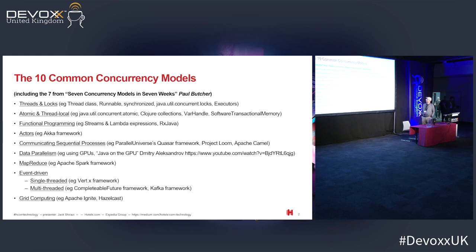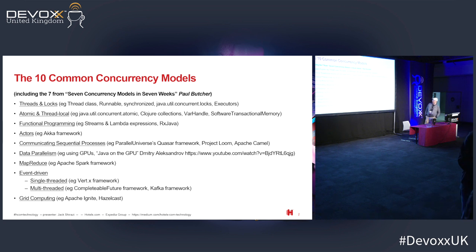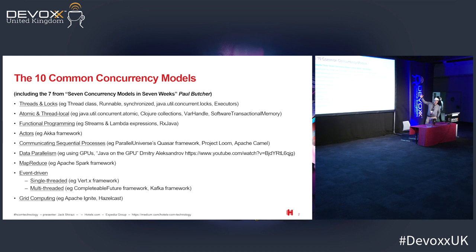I'm talking about these 10 common concurrency models. There are even more, but these are the most common, and probably you've seen and you're using at least one of these. Threads and locks has been there since the beginning of Java, nearly 25 years. The atomic stuff, the second one, was added 15 years ago.